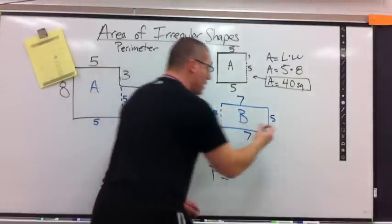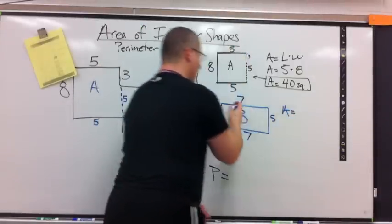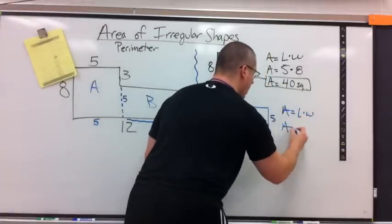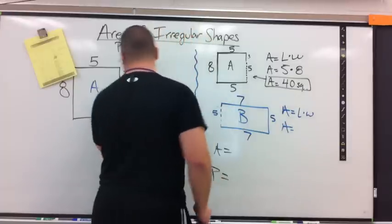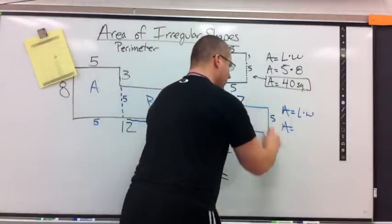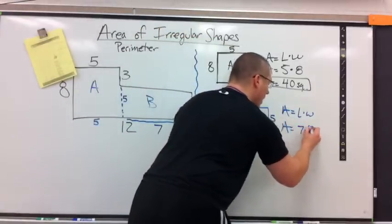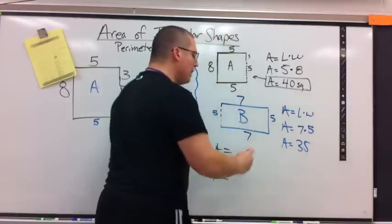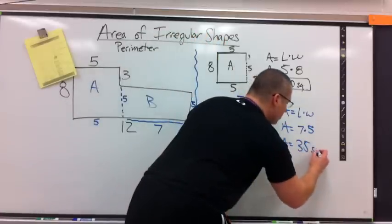Shape B area: length times width, L times W. Should I write this next calculation? Yes, you should. Seven times five. A equals thirty-five. What is your label? I think it's squares. It is squares.